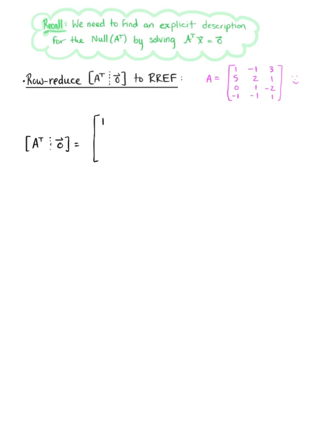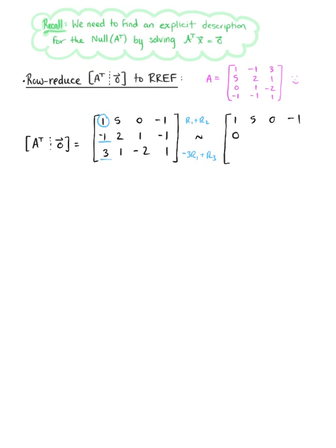Interchanging the rows and columns of matrix A, A transpose has first row (1, 5, 0, -1), second row (-1, 2, 1, -1), and third row (3, 1, -2, 1). We take the first pivot and eliminate the entries below it by doing the first row plus the second row, and -3 times the first row plus the third row. This produces: row 1 is (1, 5, 0, -1); row 2 is (0, 7, 1, -2); row 3 is (0, -14, -2, 4).